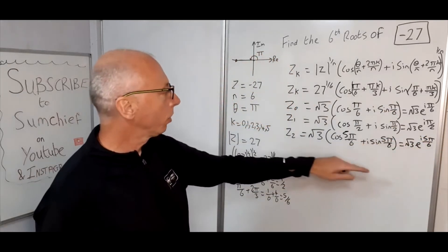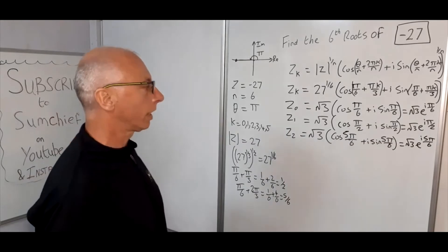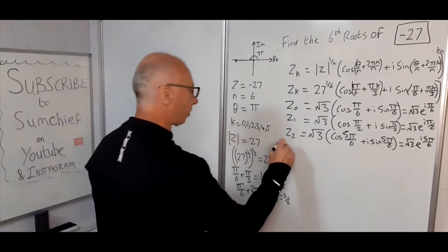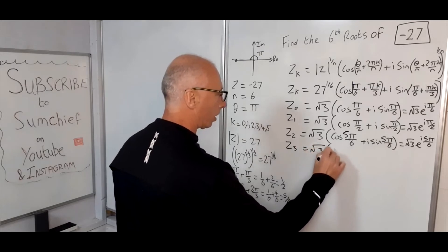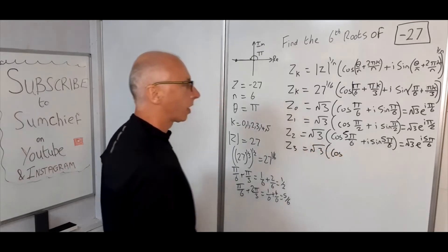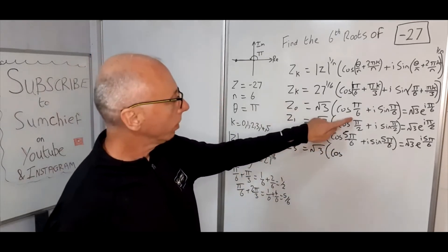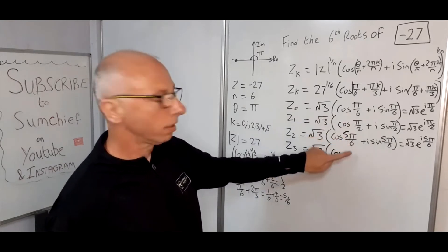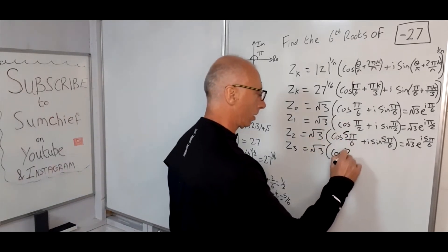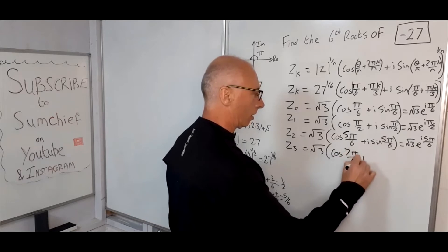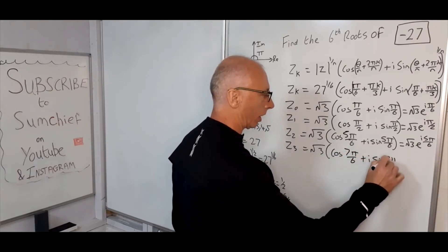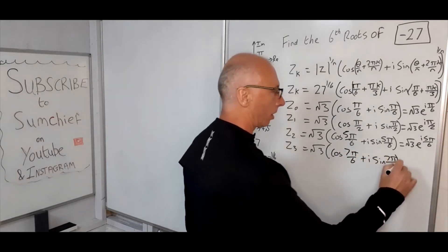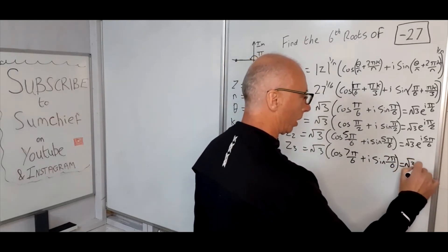These are all in polar form using Euler's identity. For Z₃ (K = 3), the next angle is 7 pi over 6. So Z₃ = root 3 times (cosine 7 pi over 6 plus i sine 7 pi over 6), which equals root 3 e to the i 7 pi over 6. For Z₄ (K = 4), the angle is 9 pi over 6, which simplifies to 3 pi over 2. Z₄ = root 3 times (cosine 3 pi over 2 plus i sine 3 pi over 2), which equals root 3 e to the i 3 pi over 2.